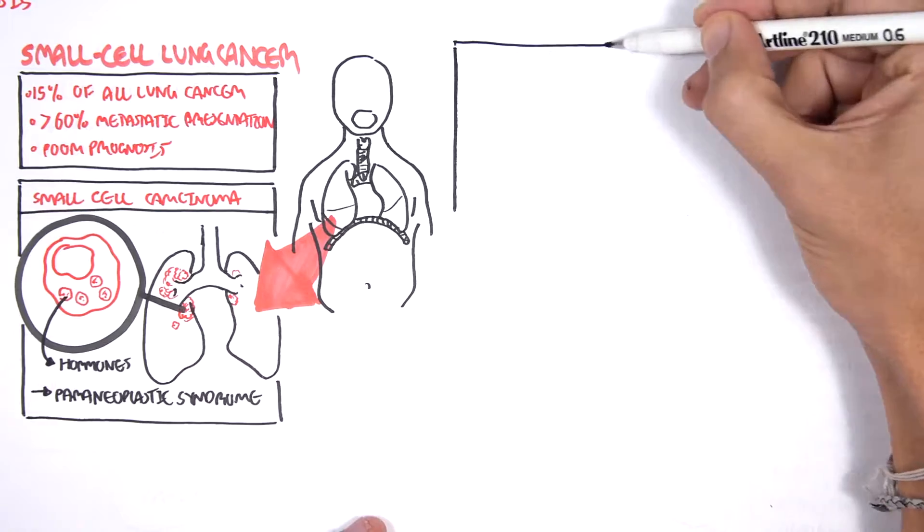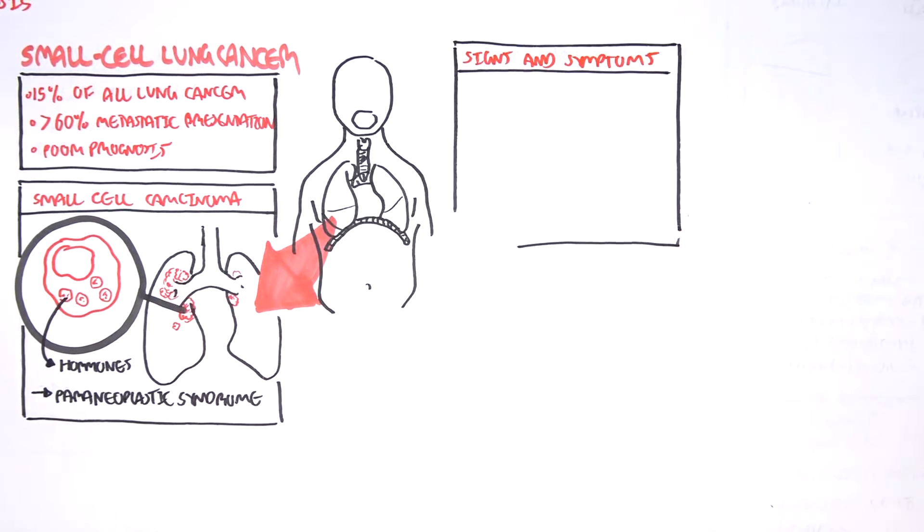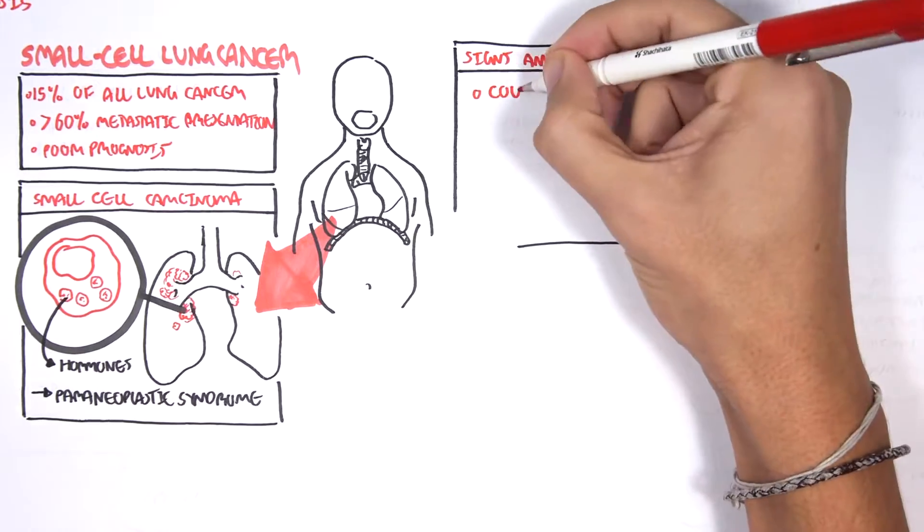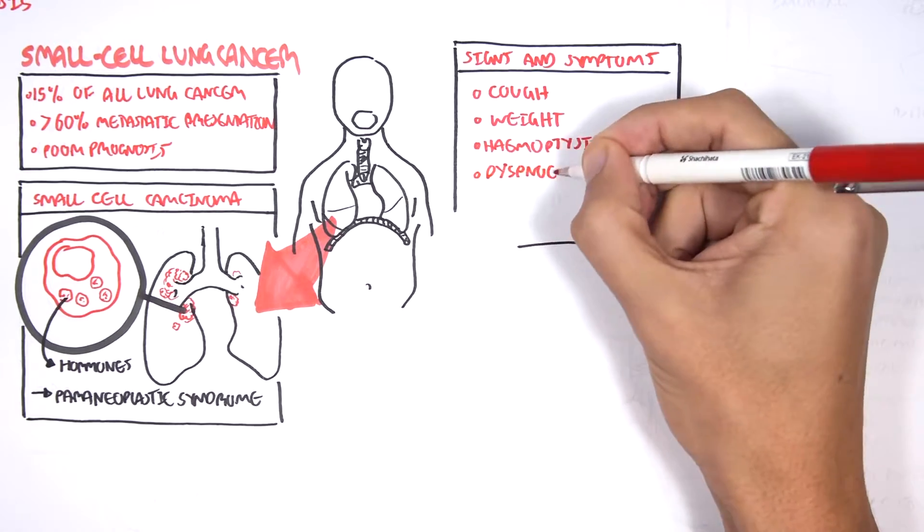Let us look at the signs and symptoms of patients that present with lung carcinomas. Not everyone presents with the same signs and symptoms, but the most common signs and symptoms include cough, weight loss, hemoptysis, dyspnea, and chest pain.